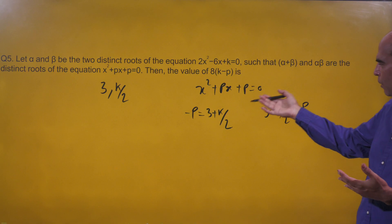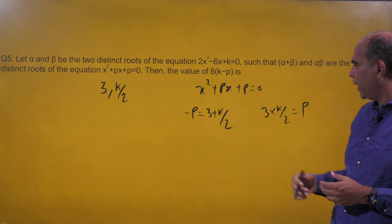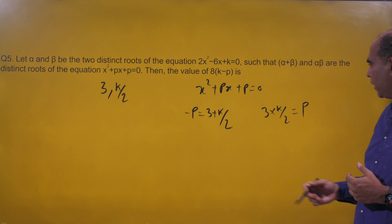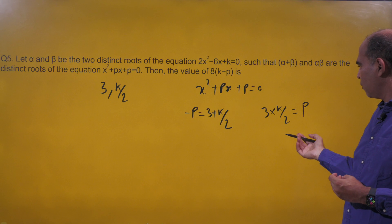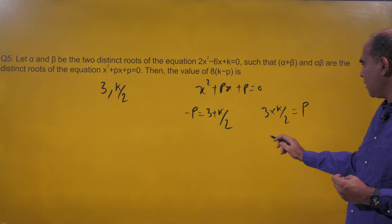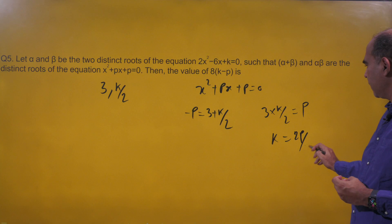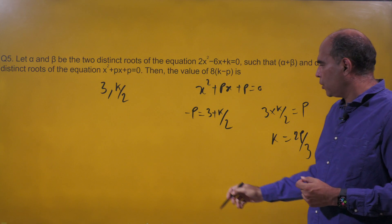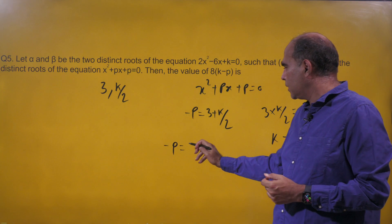Once I have this, I just had to find the value of k and p and put it into the target value 8k - p. When I use this, I can write k as 2p/3 and put that in this equation.